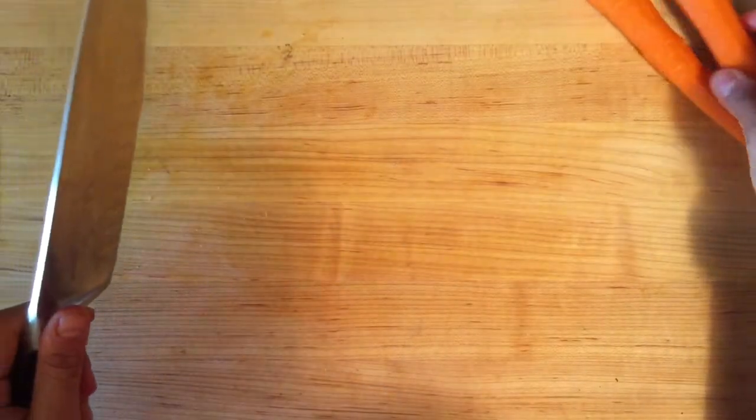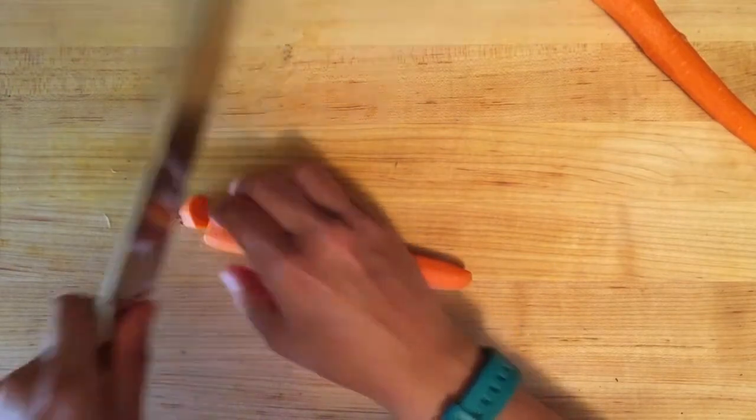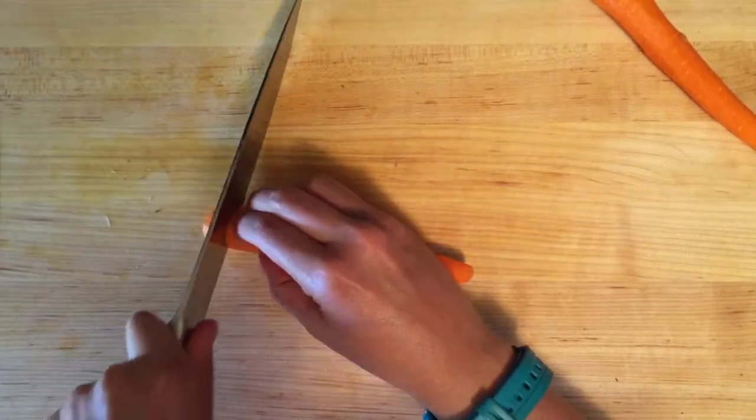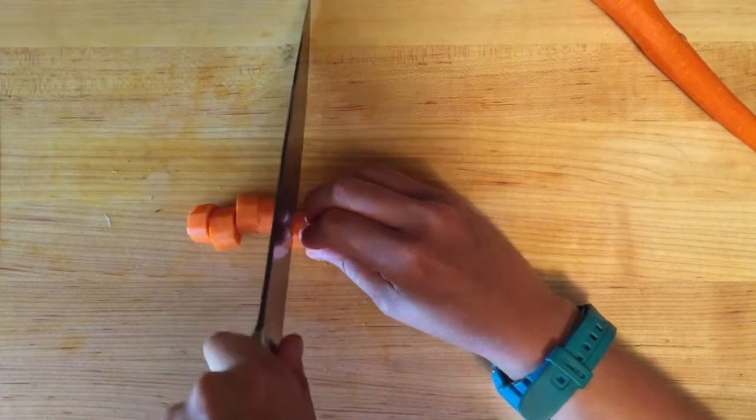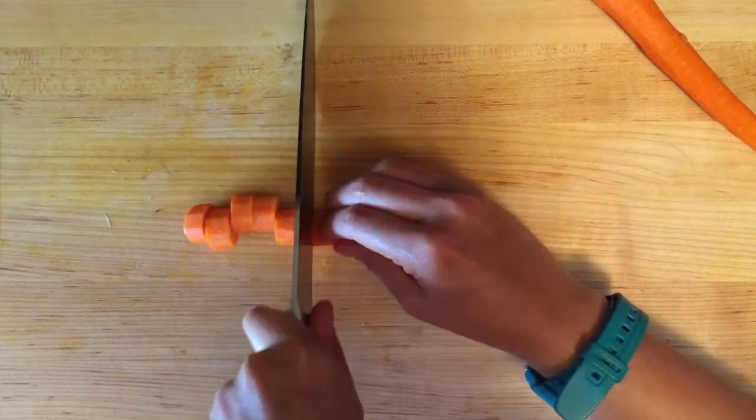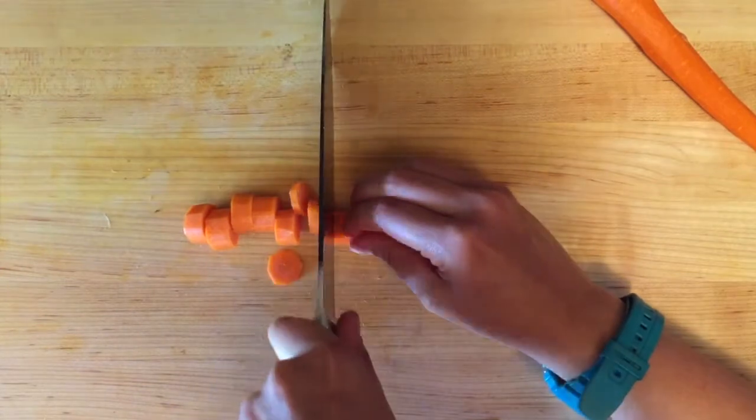Get those little elegant bias cuts out of the way or you can do fat thick cuts for roasting as well. These are really nice with fingerling potatoes. Imagine doing them in the exact same way and then roasting them together. It's so beautiful and delicious.